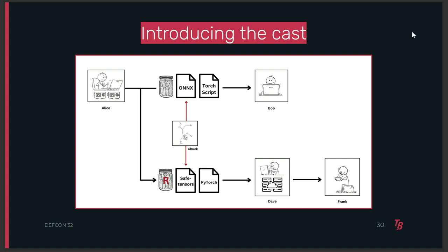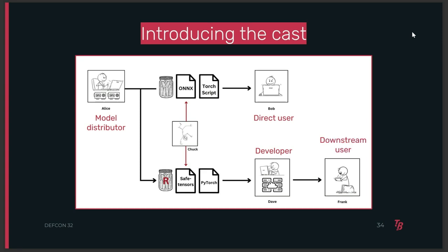These are some characters that play important roles in the ML ecosystem. Alice distributes models — she takes open source LLMs and fine-tunes them, and her models are what everyone else in our story will be using. Bob is a frontline user who directly uses Alice's models. Dave is a developer trying to integrate these models into products. Frank is the end user relying on Dave's products, often unaware of the ML models working behind the scenes. And Chuck is the attacker. Our focus will mainly be on how Chuck can impact Bob and Dave. I'll describe exploits involving pickle, PyTorch, TorchScript, ONNX, and SafeTensors.